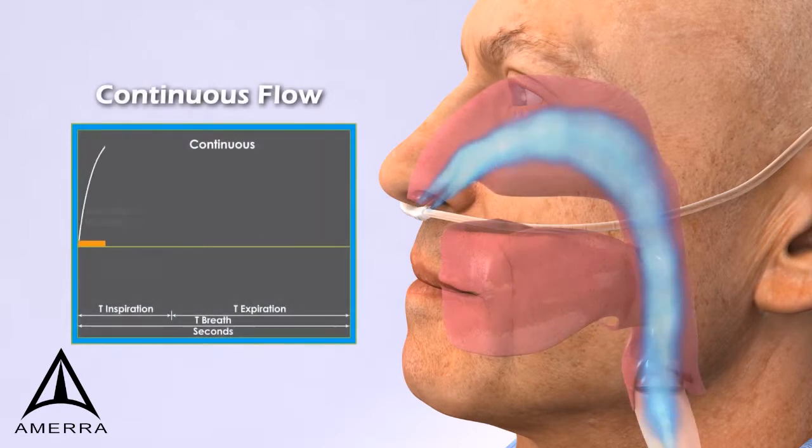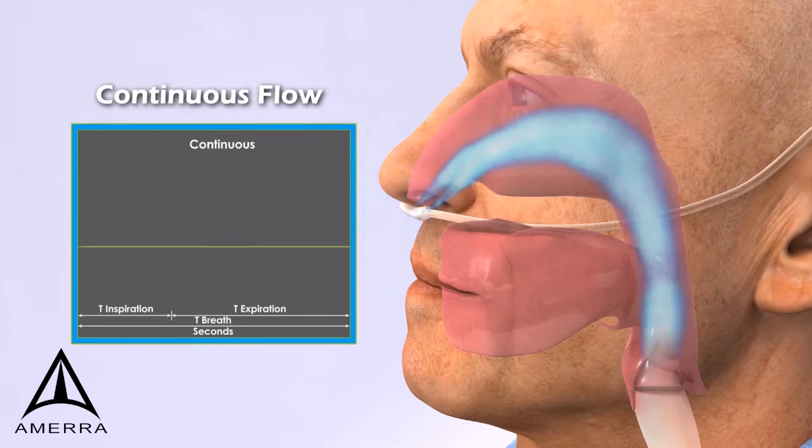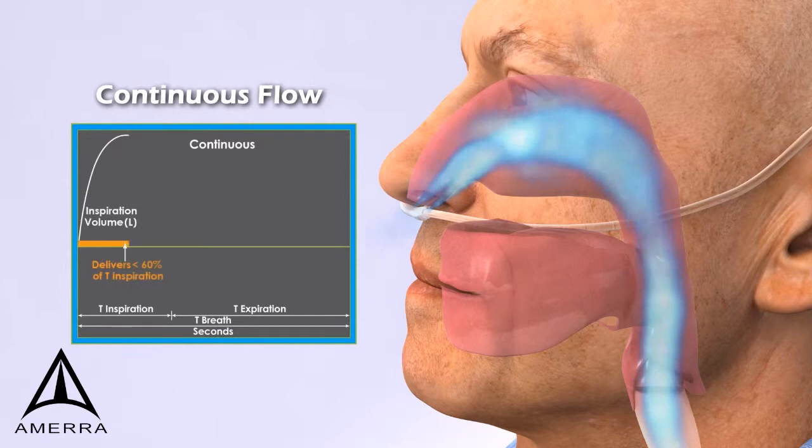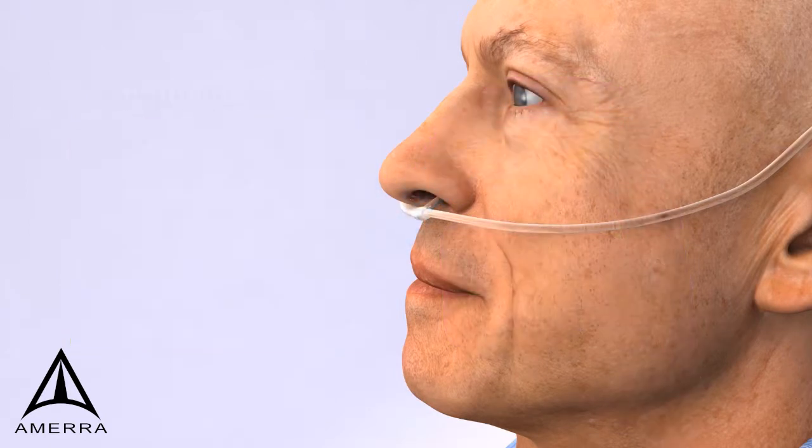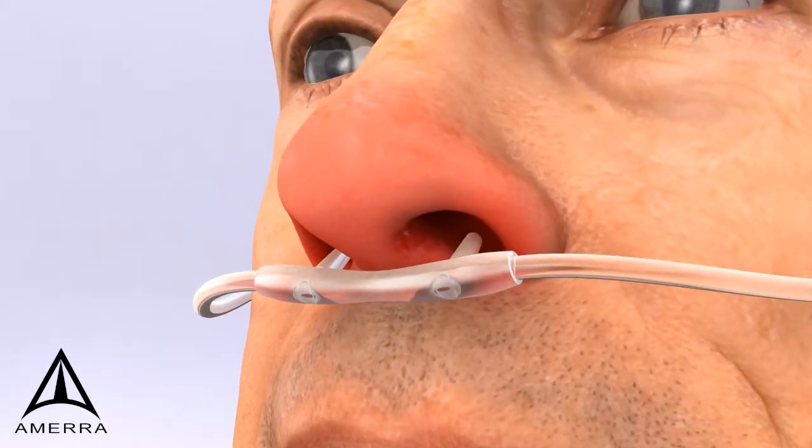Current continuous flow therapies provide a constant flow of oxygen to the patient during inhalation and exhalation. However, as patients only absorb oxygen during the first 60% of the inspiratory cycle, a significant amount of the oxygen delivered by continuous flow systems is lost in retrograde flow. For many patients, this retrograde flow causes nasal irritation and nose bleeding.